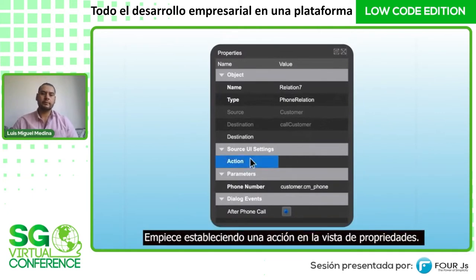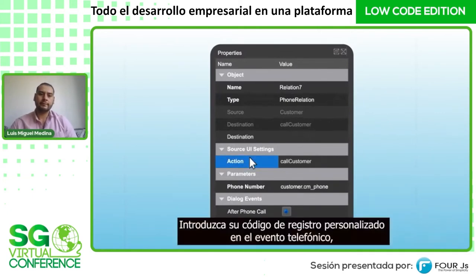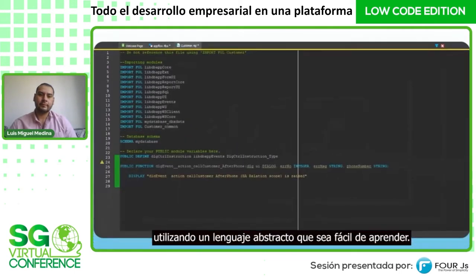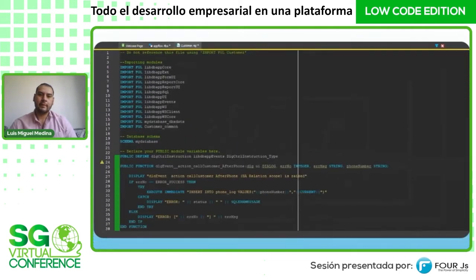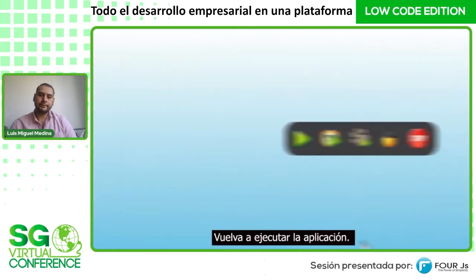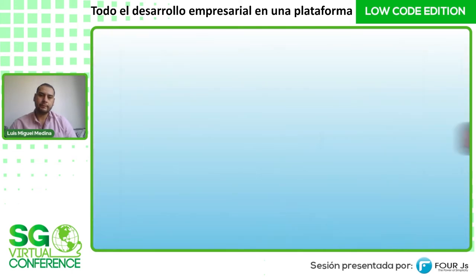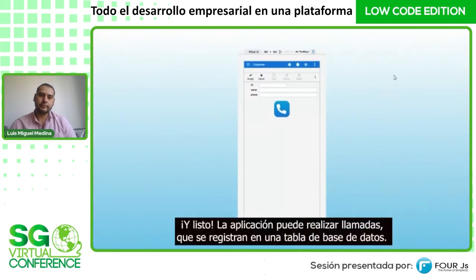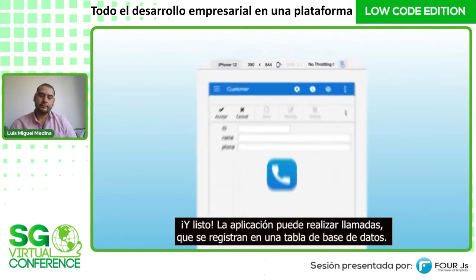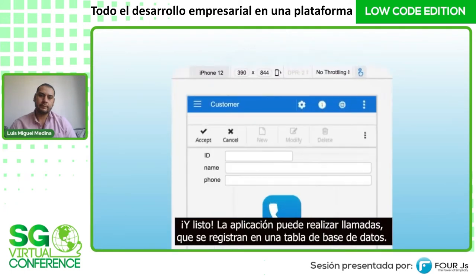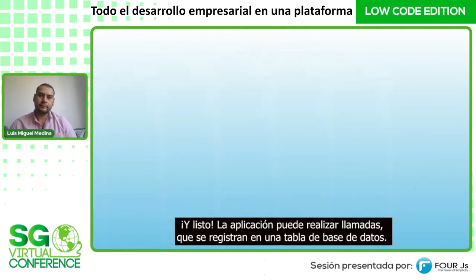Do this using events to trigger your custom logging code. Start by setting an action in the property view. Insert your custom logging code into the phone event using an abstract language that's easy to learn. Re-run the app — and the app can make calls, which are logged to a database table.